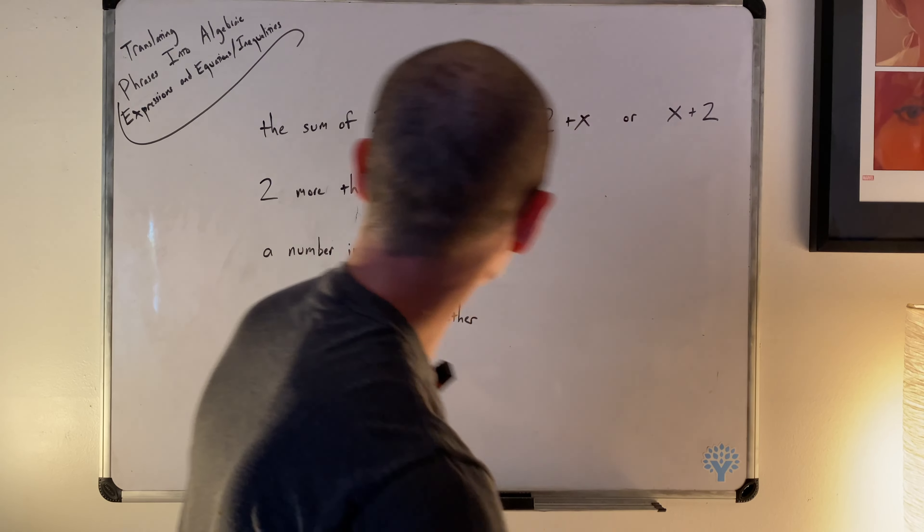The sum of two and a number means you're adding a two and a number x. So two plus x or x plus two — those are equivalent — both translate to one of these two algebraic expressions.